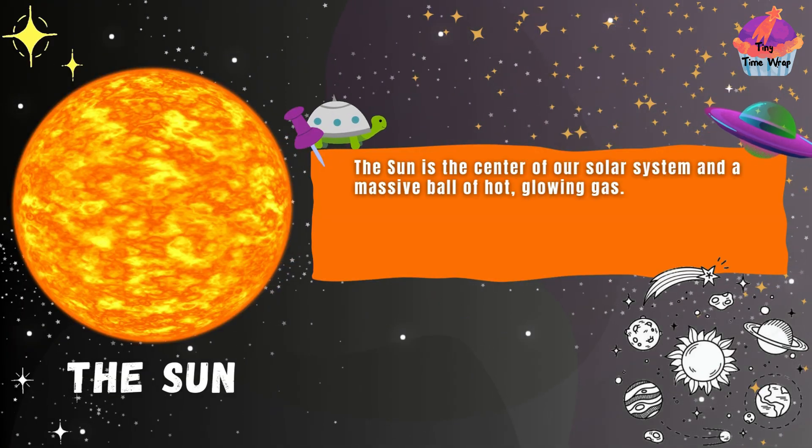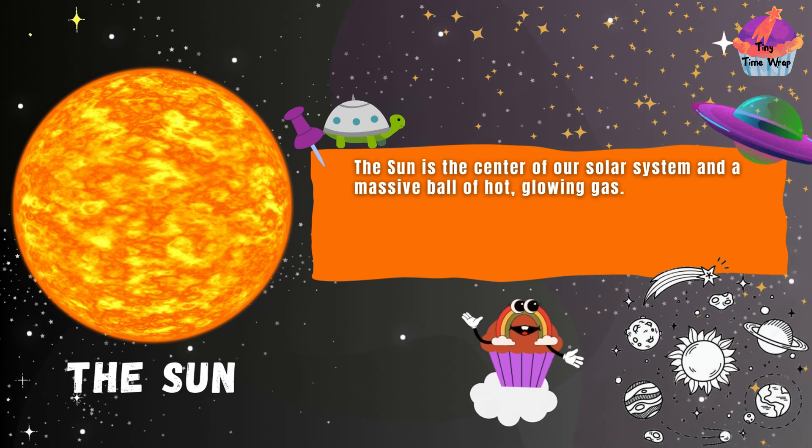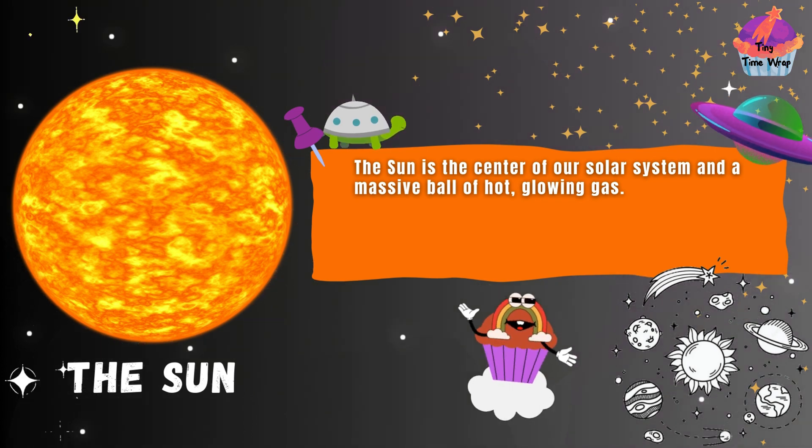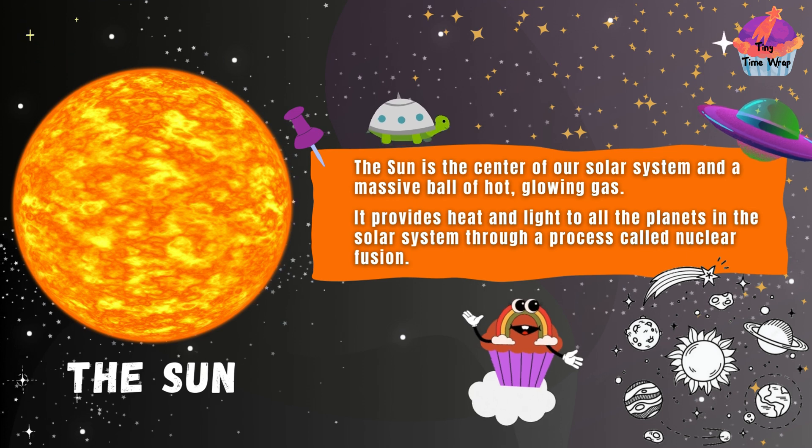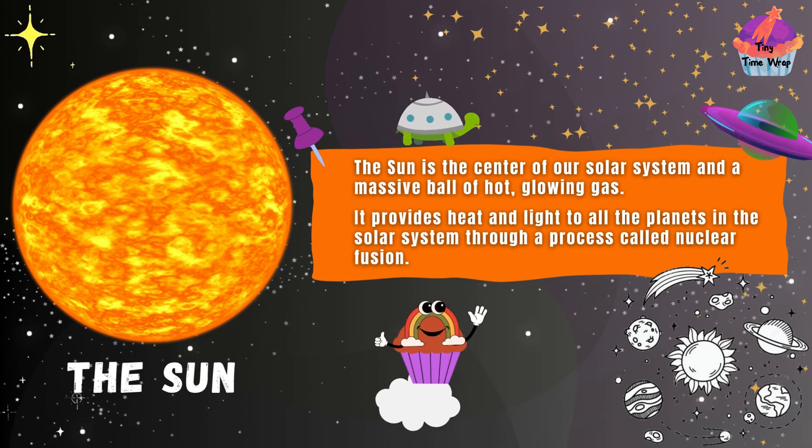The Sun is the center of our solar system and a massive ball of hot, glowing gas. It provides heat and light to all the planets in the solar system through a process called nuclear fusion.